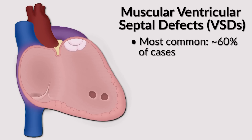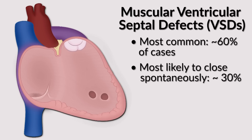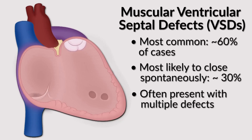Muscular defects are the most common, presenting about 60% of the time. They are also the most likely type to close spontaneously — 30% of them in fact close spontaneously. They also often present with multiple defects, which are sometimes hard to see by echocardiography.